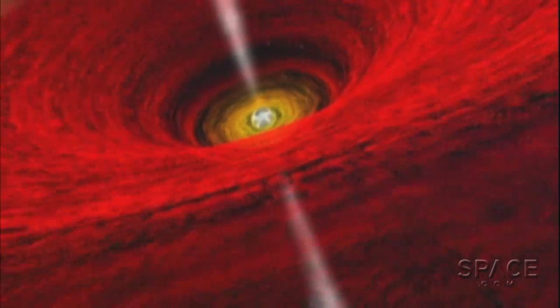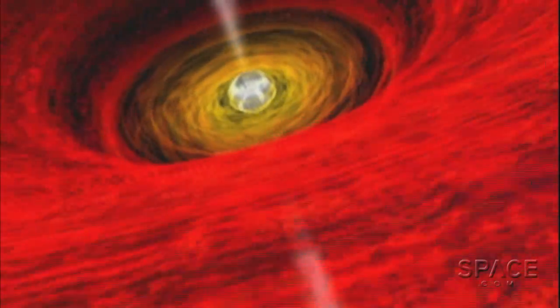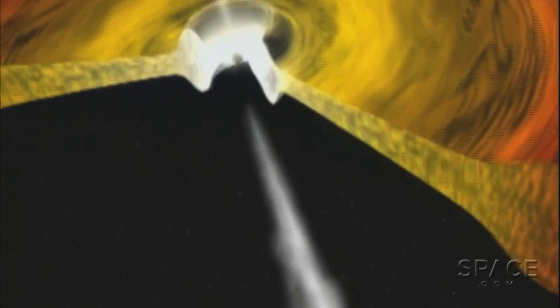Such spin strongly suggests it grew as the product of one big bite, or maybe in just a handful of slightly smaller gorging episodes, what astronomers call rapid accretion events.